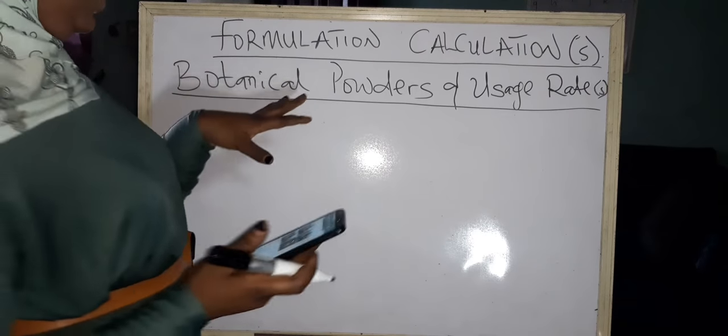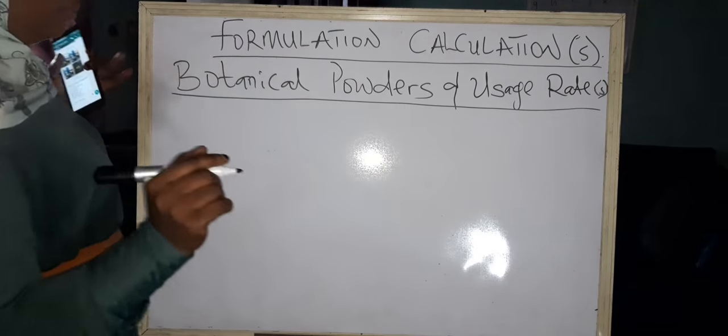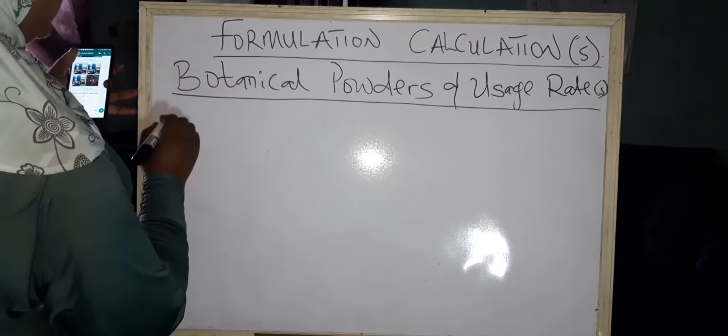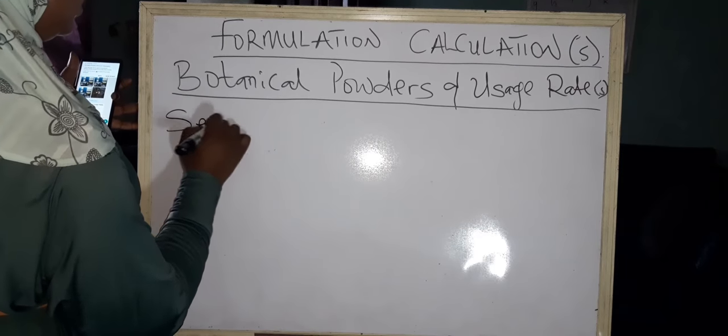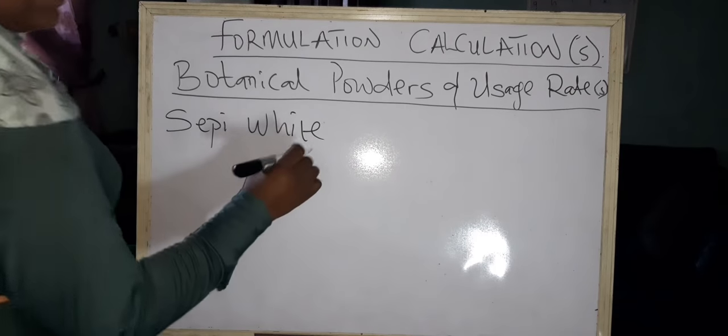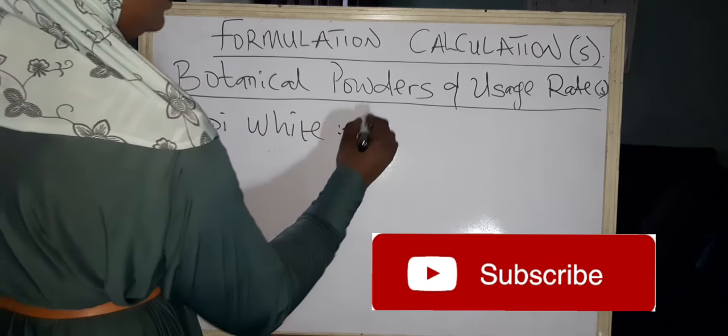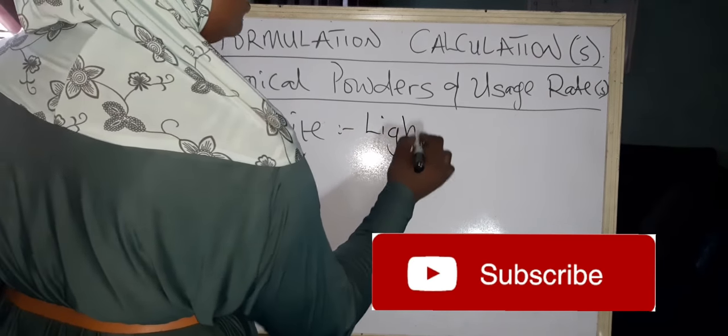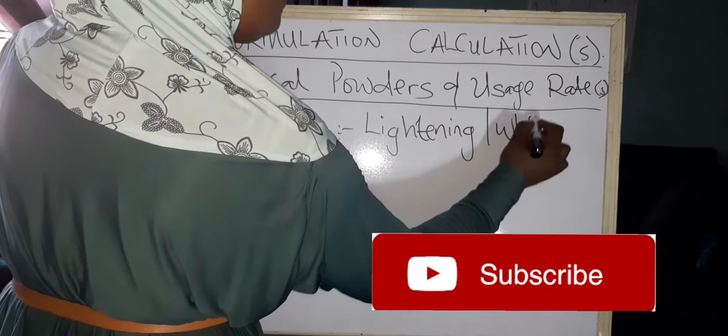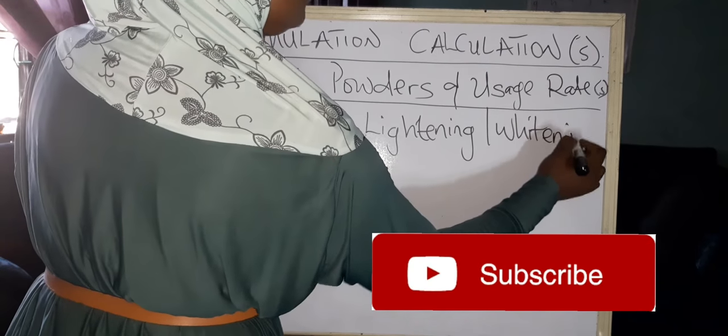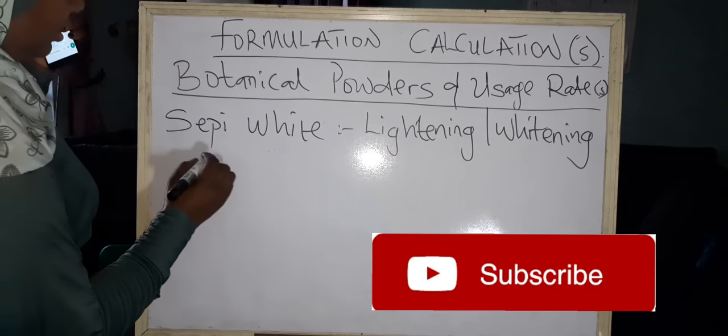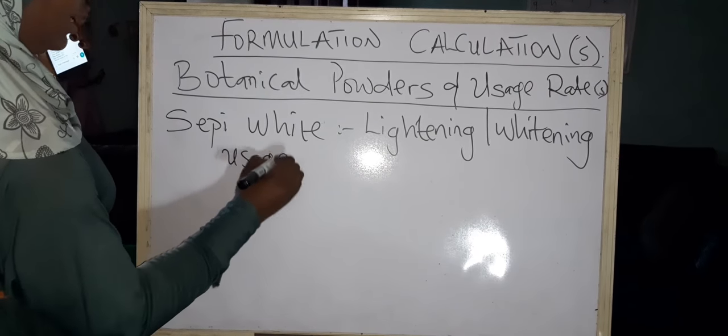Our focus today is on botanical powders. Let me give you an example of one botanical powder: Sepi White. Sepi White botanical powder is a lightening or whitening powder. It has strength, a very strong ability to whiten and even lighten the skin.